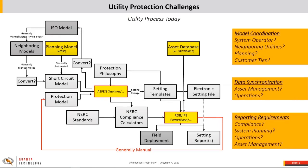I wanted to briefly highlight a process that a protection engineer may see today at a utility. In general, there's a lot of effort in maintaining a network model, coordinating with ISOs and neighboring utilities to create a short-circuit model needed for Aspen. At the same time, you need to model your protection using asset repositories and native setting files to have a comprehensive Aspen one-liner model.